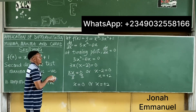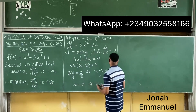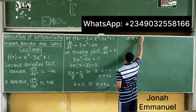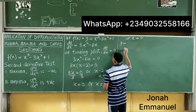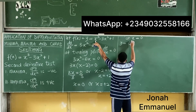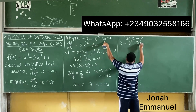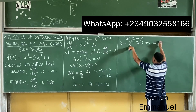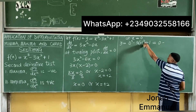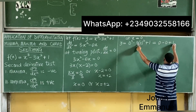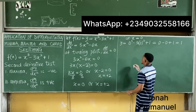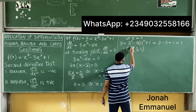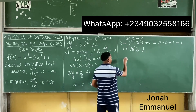Our next task is to find the corresponding value of y at these two points. At x equal to 0, y equals 0 cubed minus 3 times 0 squared plus 1, which equals 0 minus 0 plus 1, equal to 1. So I have point A at (0, 1).